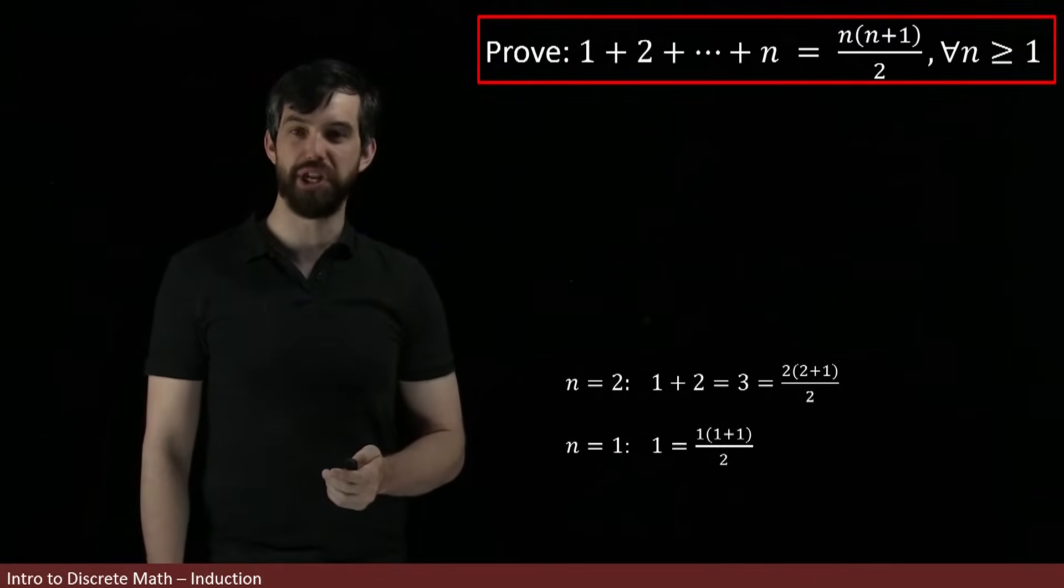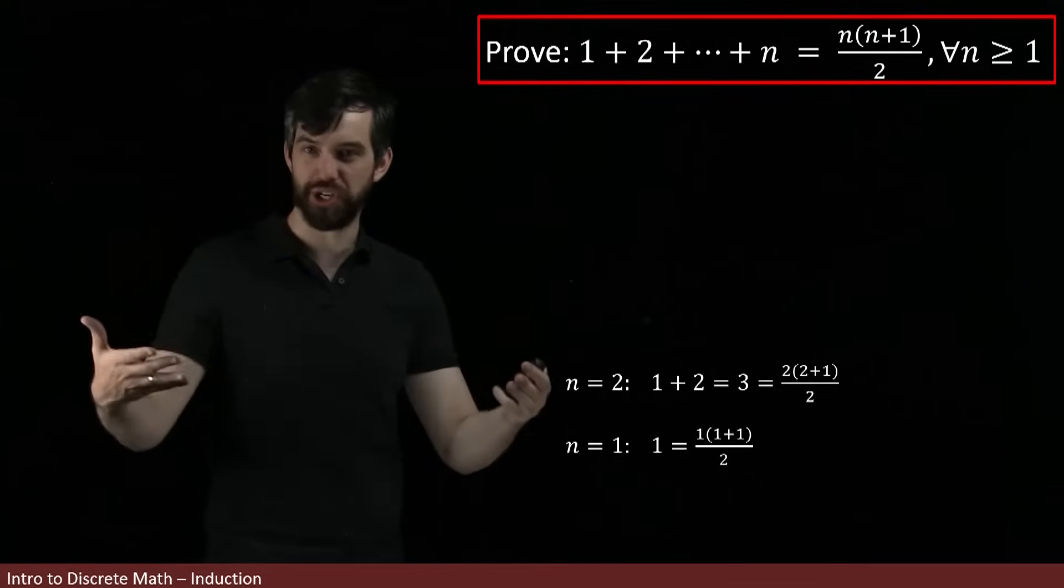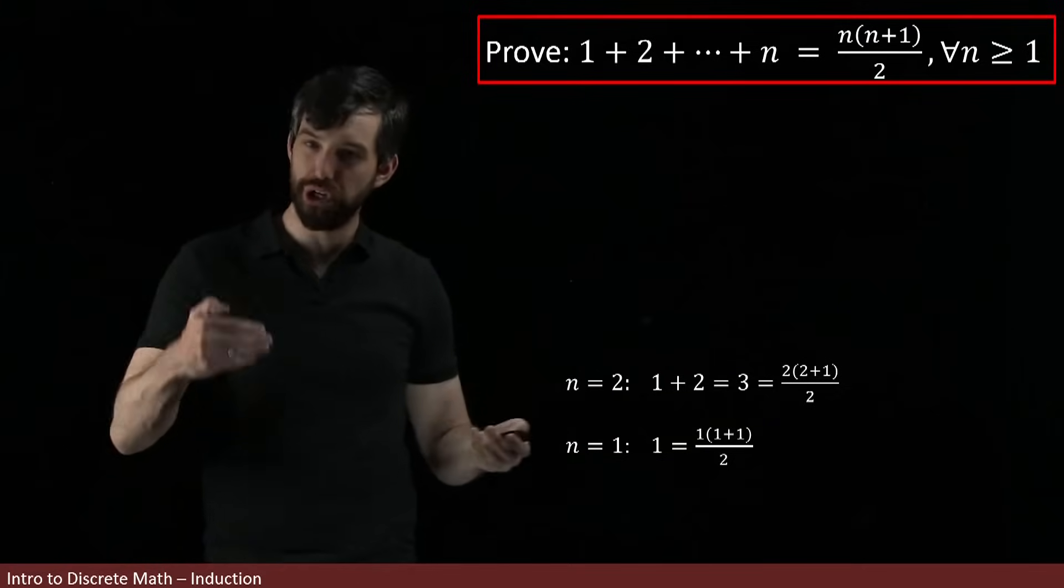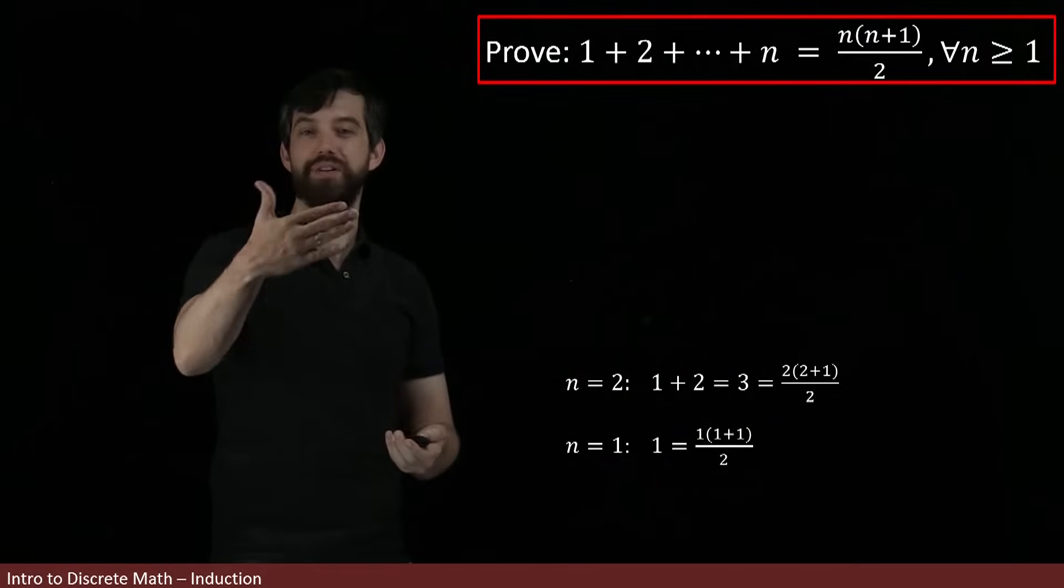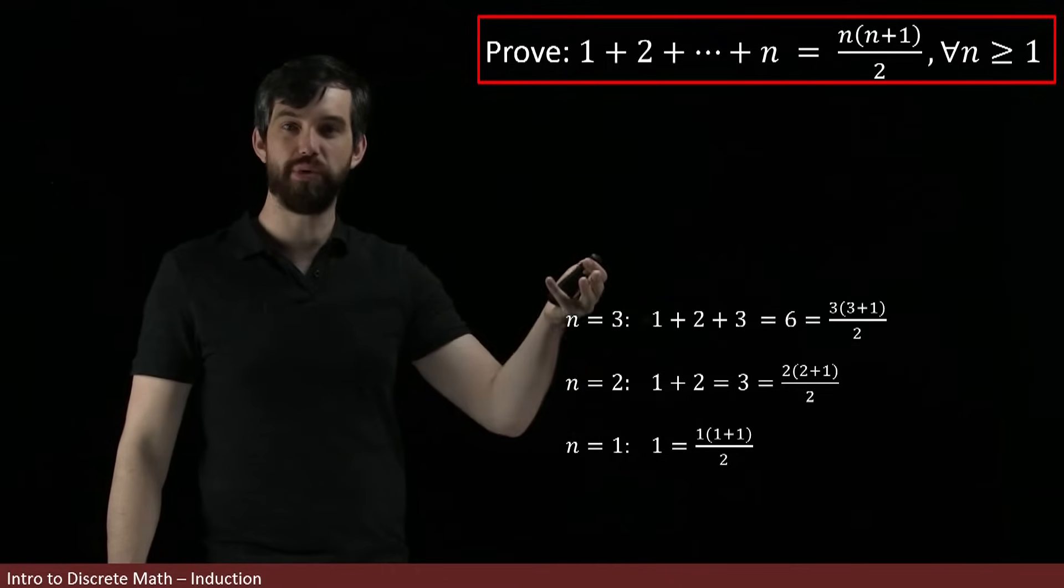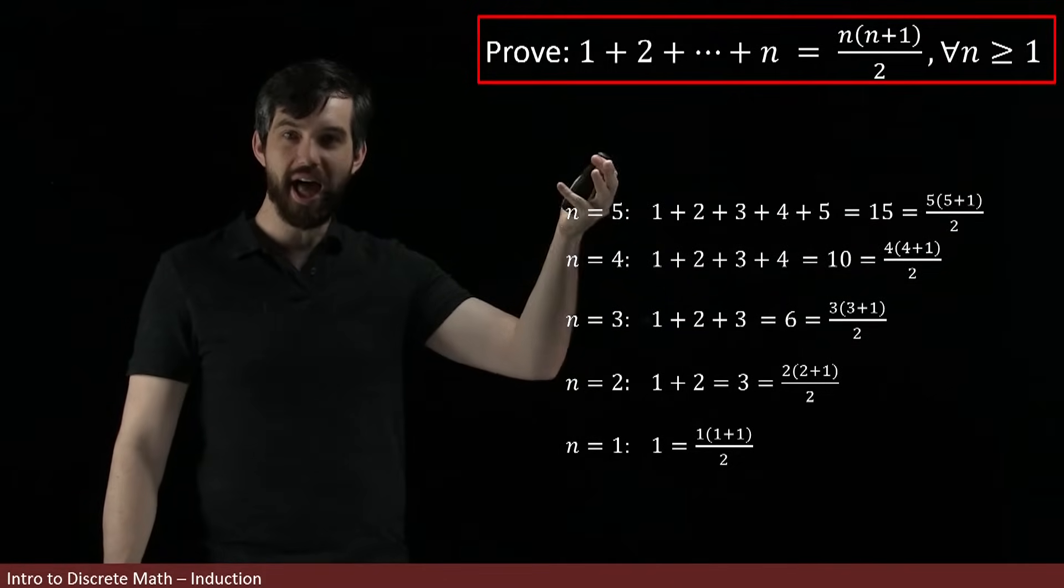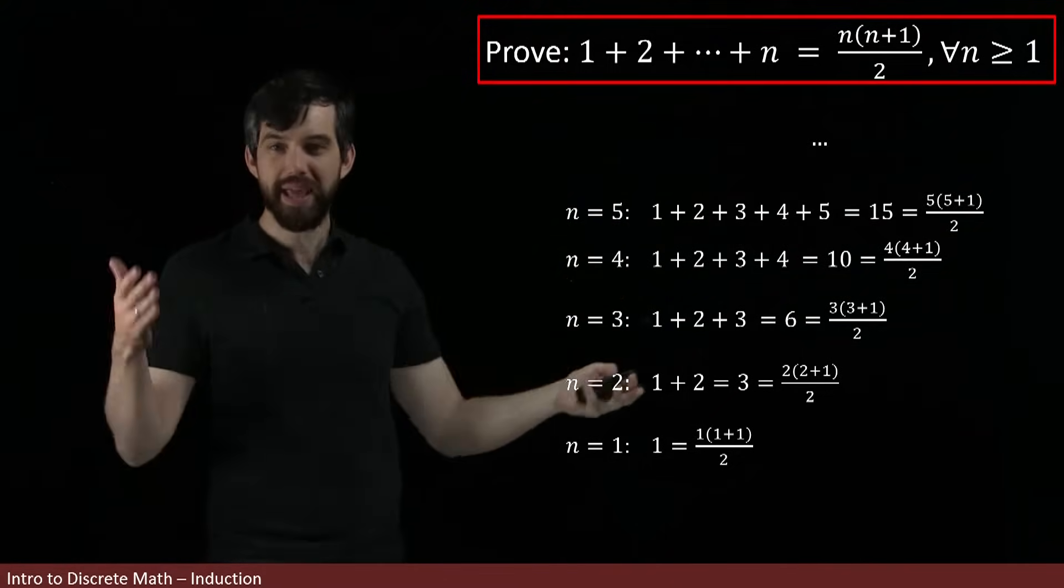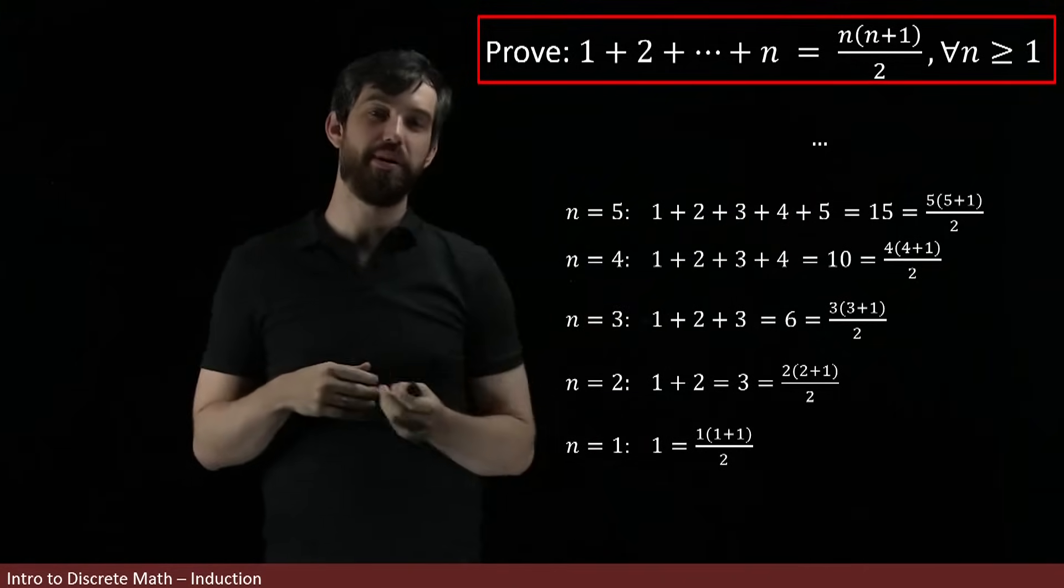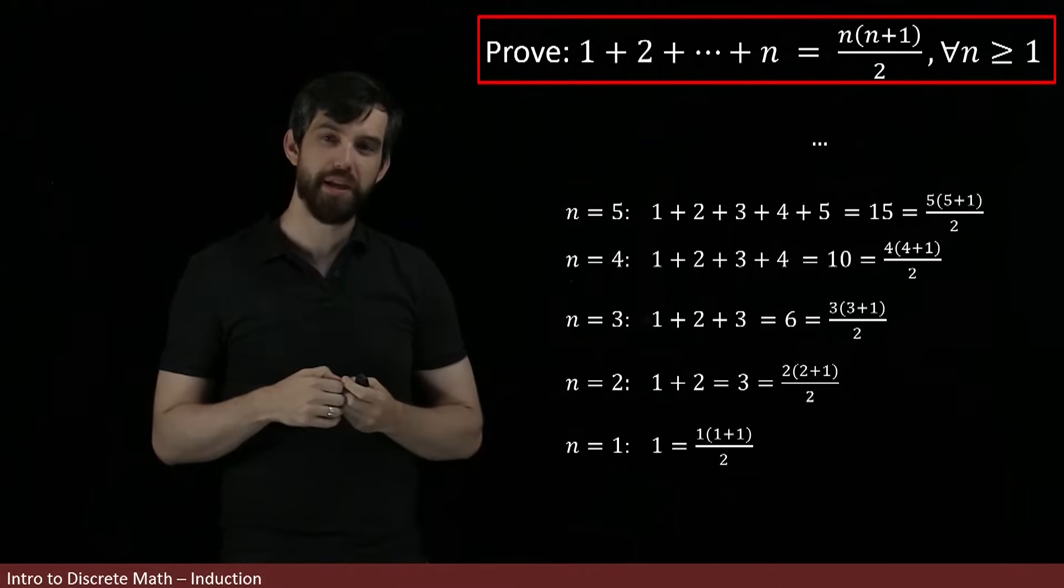And then when n is equal to 2, it's 1 plus 2. That's going to be the number 3. And indeed, this formula that I have over here is 2 times 2 plus 1 is 6 divided by 2 is 3. So it checks out as well. And I can look at what's going to happen in 3 and 4 and 5, and I can carry on as many times as I want.